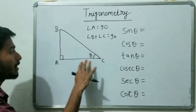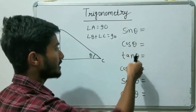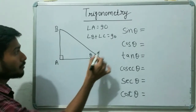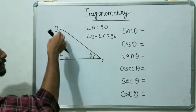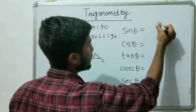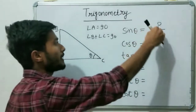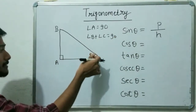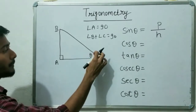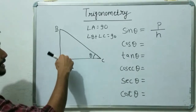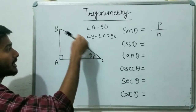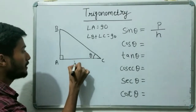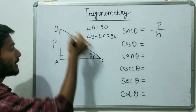In trigonometry you will see sin theta, cos theta, tan theta — and theta is totally based on the right angle triangle. The formula of sin theta is P by H, where P means perpendicular and H means hypotenuse. If the angle at C is theta, then the perpendicular will be side BA, and the hypotenuse is the side in front of the 90-degree angle. So BC is the hypotenuse, AB is the perpendicular, and AC is the base.